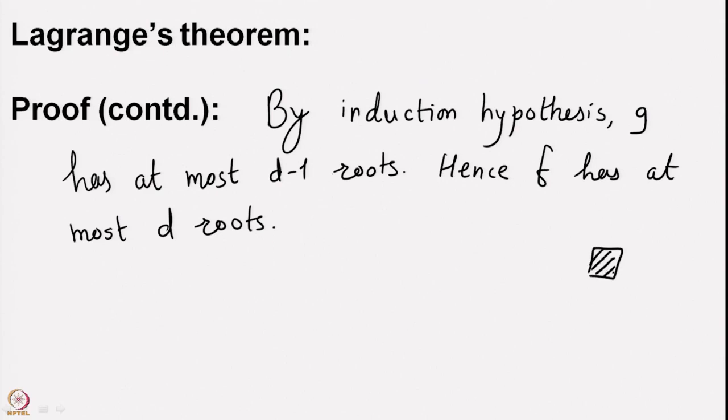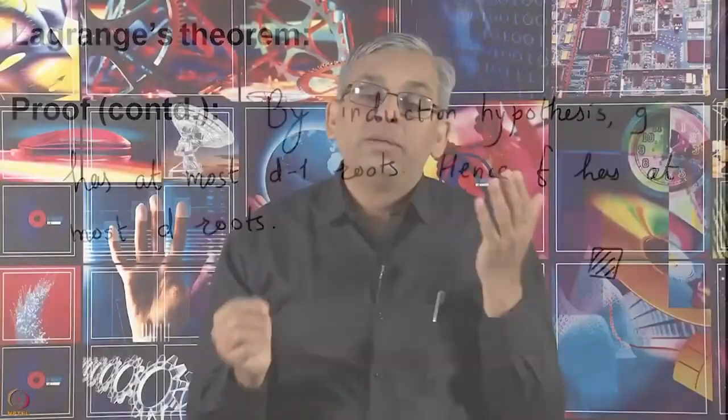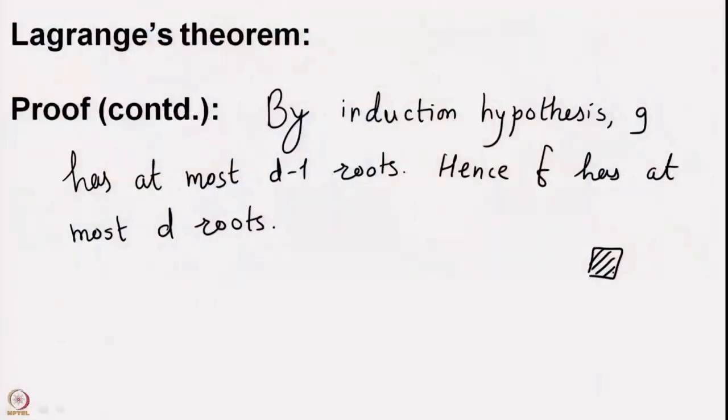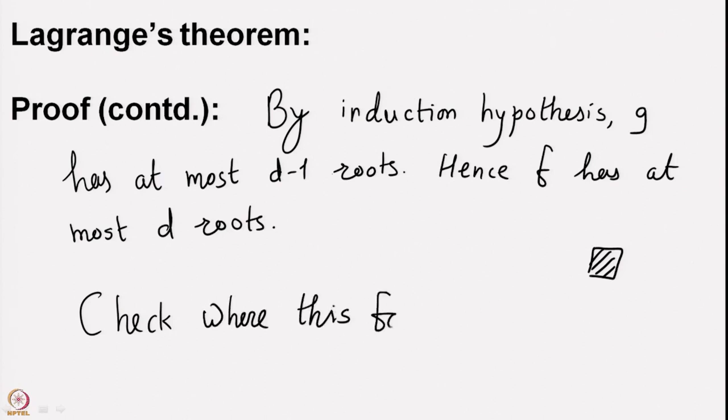You may wonder where this proof fails when you have a composite modulus. The point is exactly that with modulus 8 — where we had 4 roots — 8 divides a product of two numbers but that does not imply it divides either factor individually. Check this as a basic exercise: find where the proof fails for n = 8.